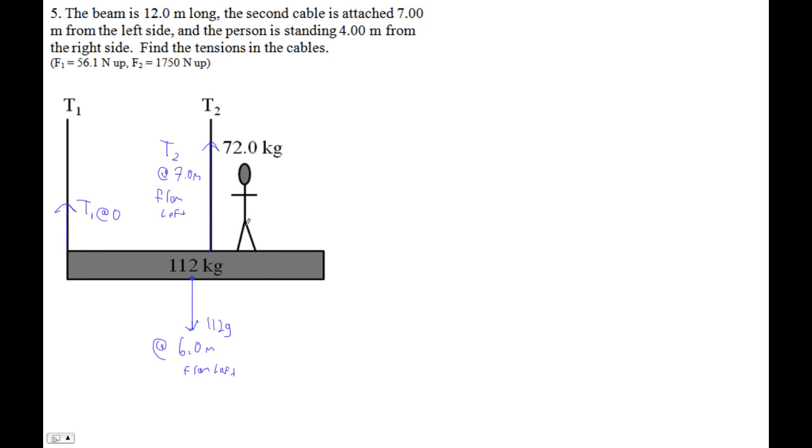This would be 6 meters from the left side. And then here's this person. That's going to be 72 G, and then the person is 4 from the right side. If it's 12 meters long and they're 4 from the right side, then they are 8 from the left side. So 8 meters from the left.